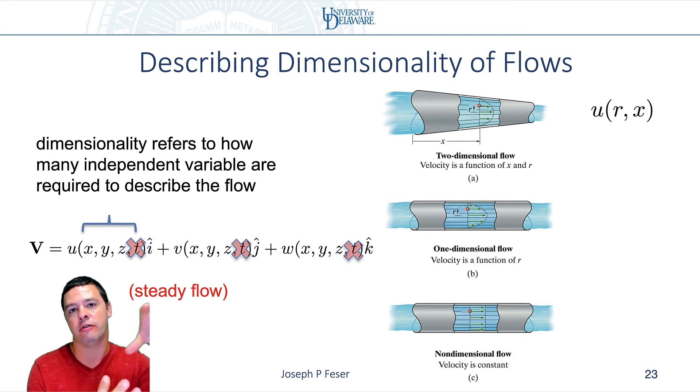So for example, in a converging nozzle, if there's no theta component of the velocity, you might not need to talk about one of those dimensions, right? So the horizontal component of velocity might only be a function of the radial position relative to the axis of the pipe and the distance along the pipe.